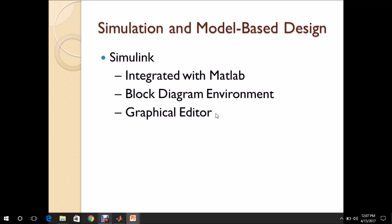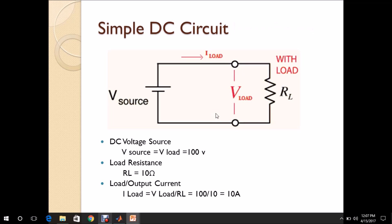Let us start with a simple DC circuit. A DC voltage source of 100 volts is connected with a resistive load of 10 ohms. The load current is calculated as V load divided by R load, that is 100 divided by 10, which gives 10 amps.